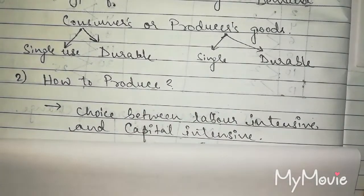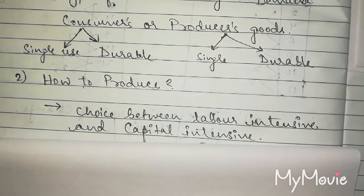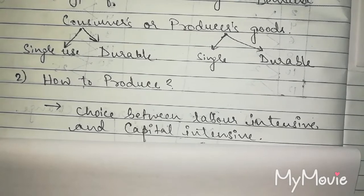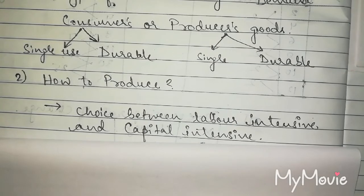How to produce - how do we decide? This is a choice whether you want to produce labor intensive or capital intensive goods. Labor intensive and capital intensive are the goods in which these factors are used most. If it's labor intensive goods, then labor is used more and capital is less. And capital intensive goods are those in which capital is used more and labor is less.